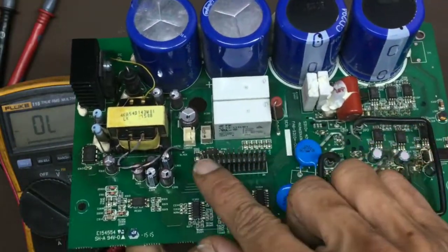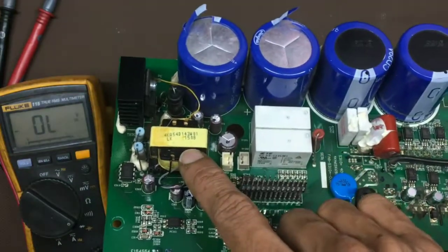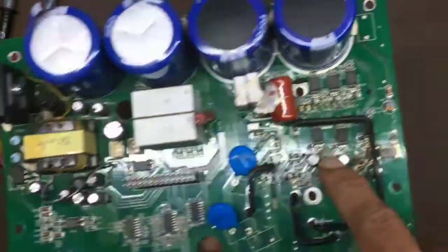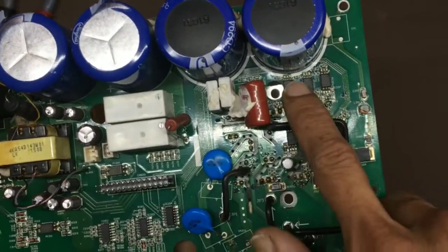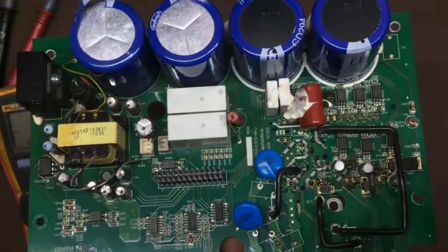This is the connector for control card. Relays. SMPS transformer. SMPS switching IC. This is the optocouplers. Firing circuit. Input. Typically, a VFD has three main sections.